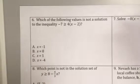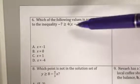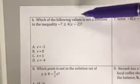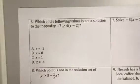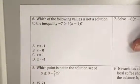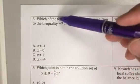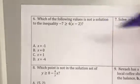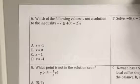Part 2 of review for unit 5. Which of the following values is not a solution to the inequality -7 ≥ 4(x - 2)?